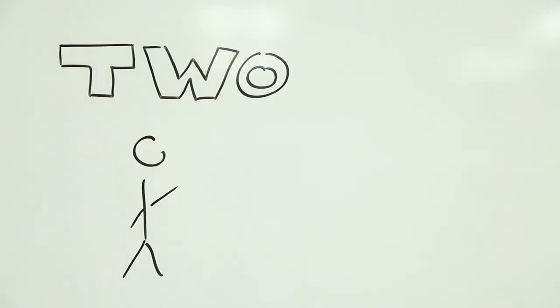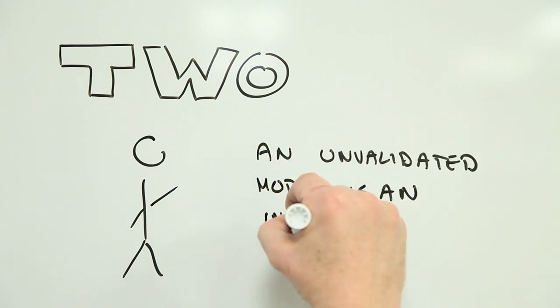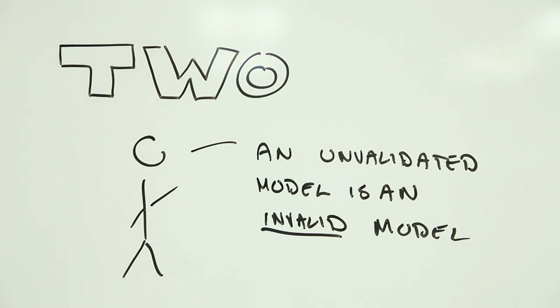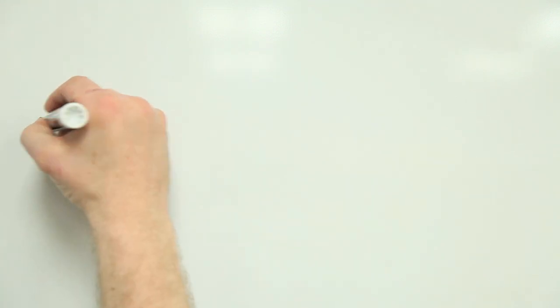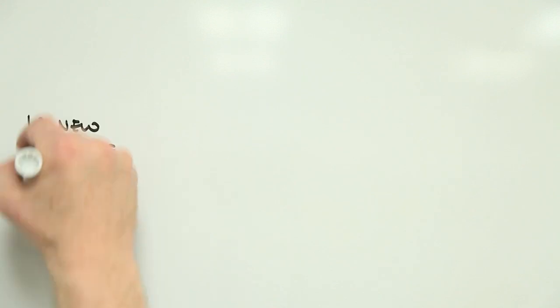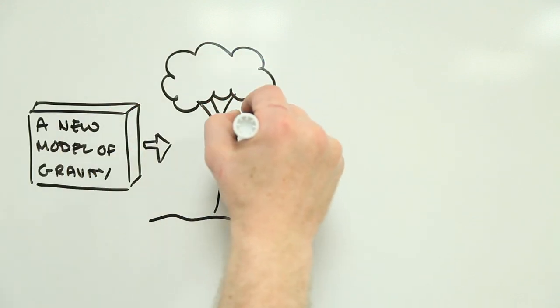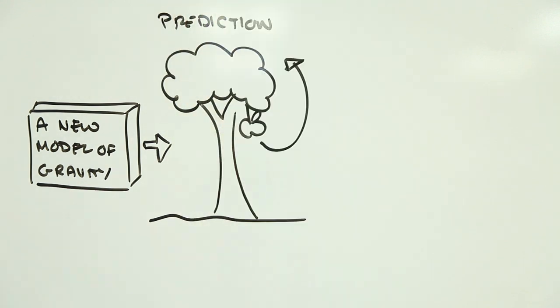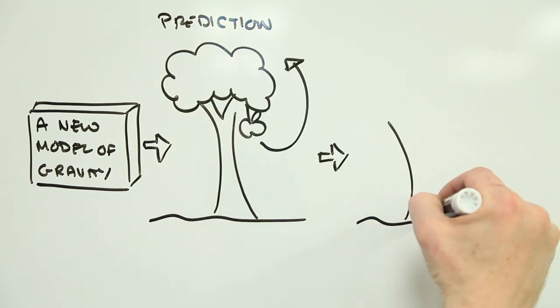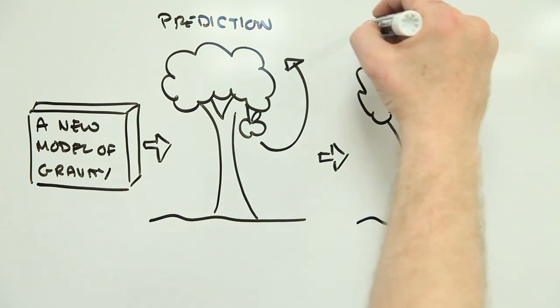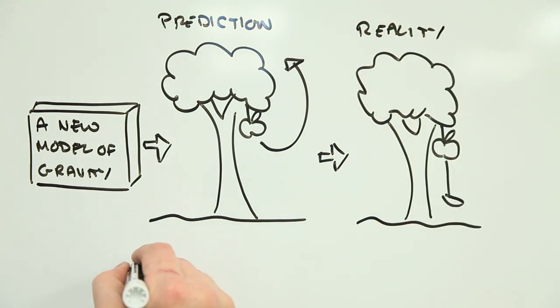2. An unvalidated model is an invalid model. How do you know that you can trust a model? The best way is to have it predict something that you already know the answer to. If prediction and reality are close, your confidence in the model to be able to predict things you don't yet know will go up. This is validation. And without it, any model is worthless.